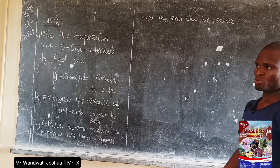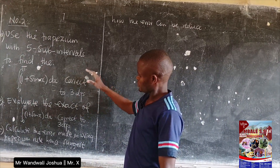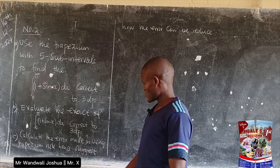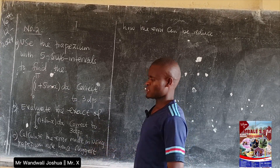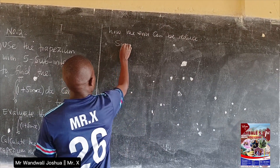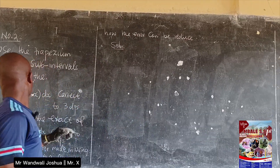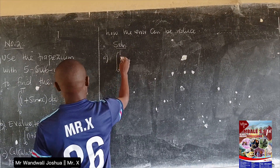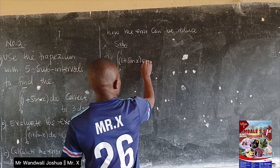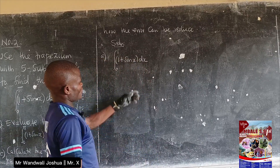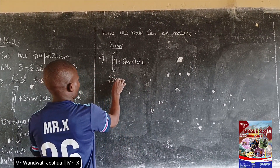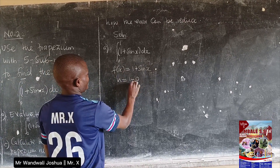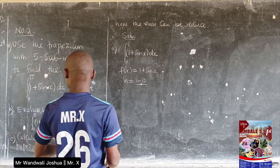This question requires us to first apply the trapezium rule principle, then find the exact value — which is handled in paper one — and then calculate the error. For part A, we follow the same procedure as before. Our f(x) = 1 + sin x, and our height h = (upper limit − lower limit) / number of sub-intervals. We are told to use five sub-intervals.